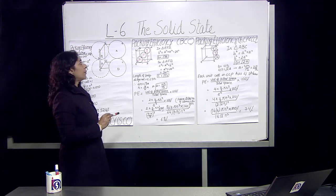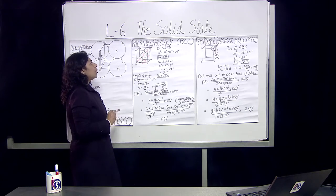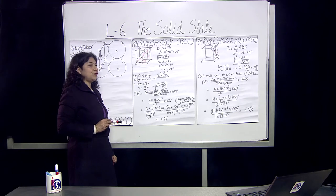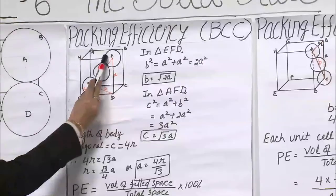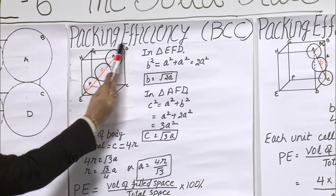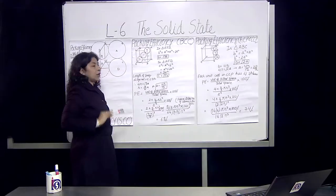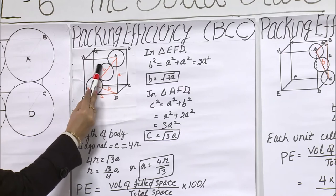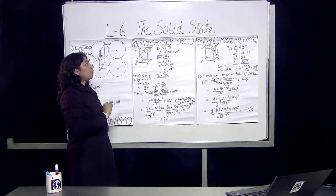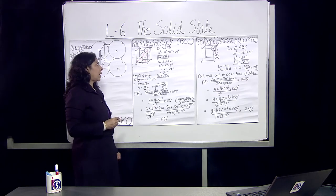Now let us discuss packing efficiency of body-centered cubic cells. In a body-centered unit cell, atoms are at each corner and one atom is at the center of the body. That means there are 8 corner atoms plus 1 body-center atom. To find the relationship between A and R, we need to apply some geometry.